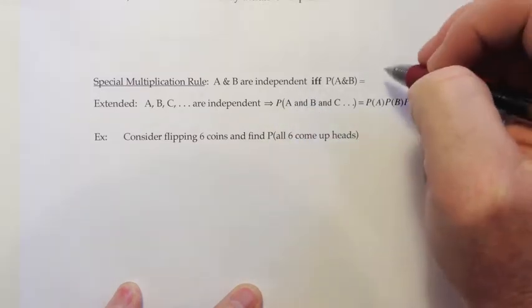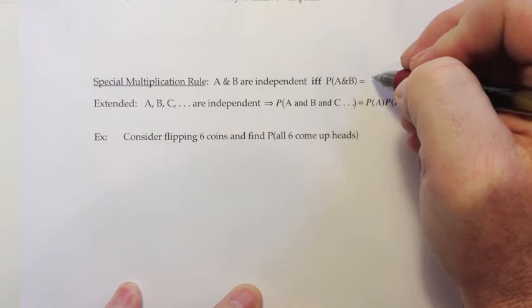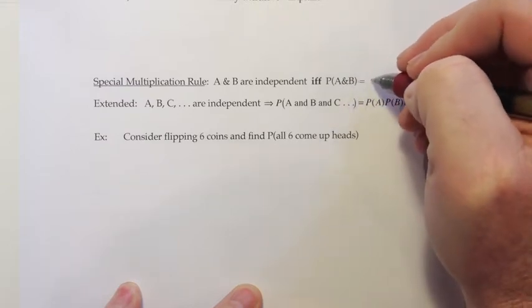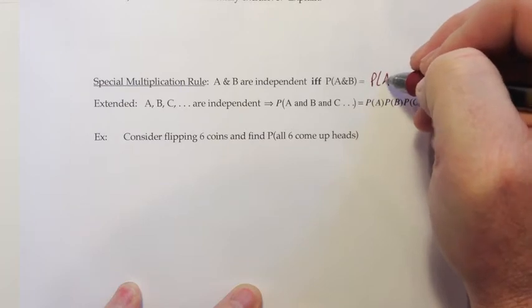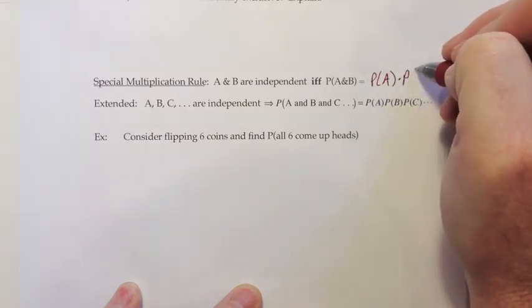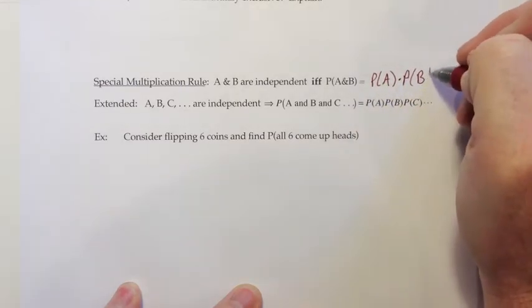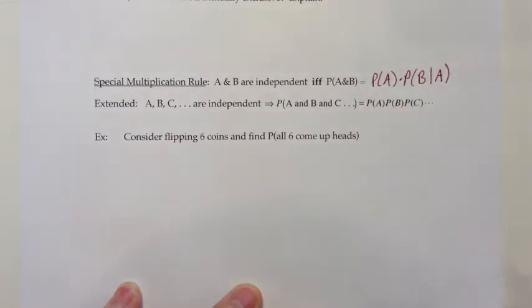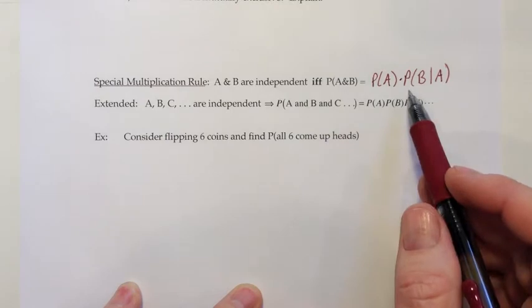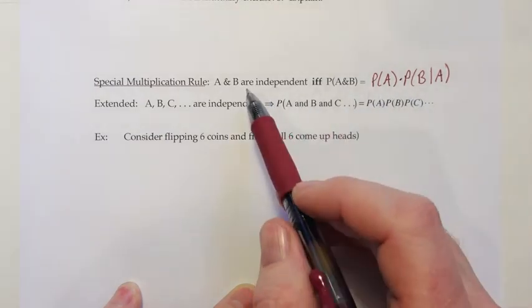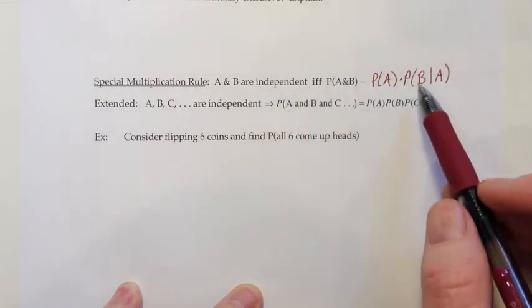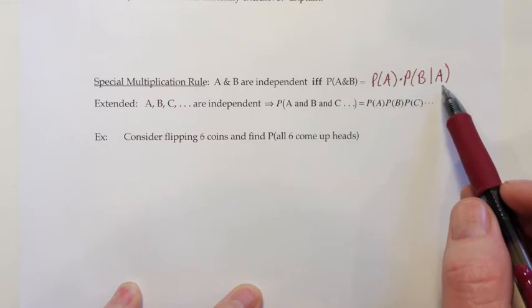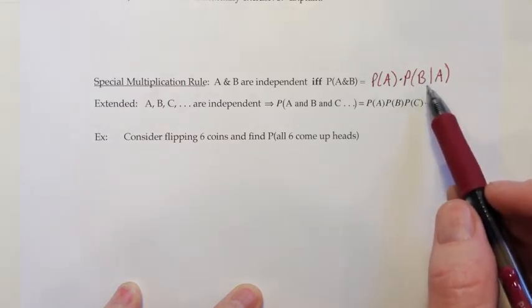I'm going to start by writing down the general multiplication rule we saw a couple pages back. It said the probability of A and B equals the probability of A times the probability of B given A. That holds all the time — you could always do an AND probability this way. But if A and B are independent, then the probability of B given A, according to the definition on the previous page, would just be the same as the probability of B.